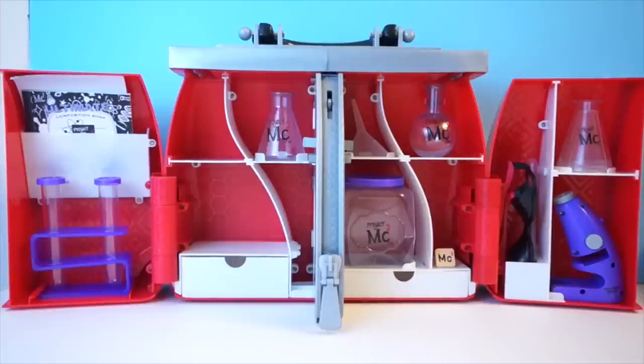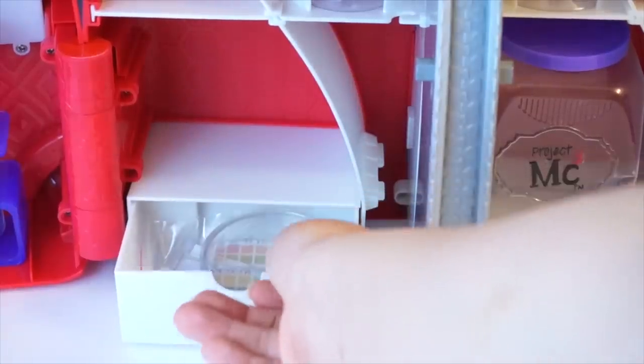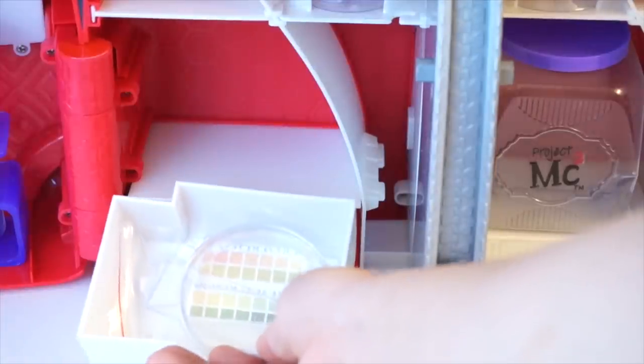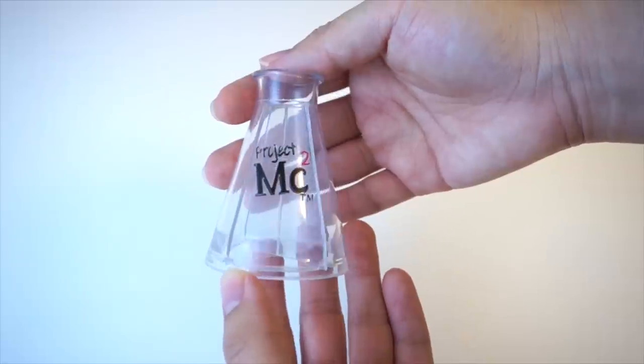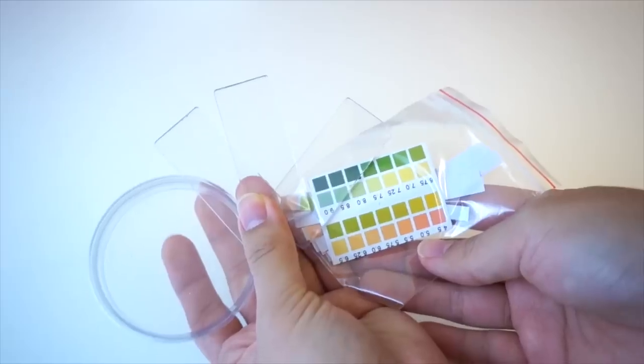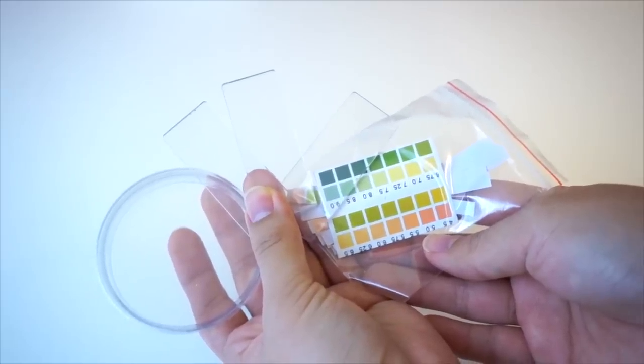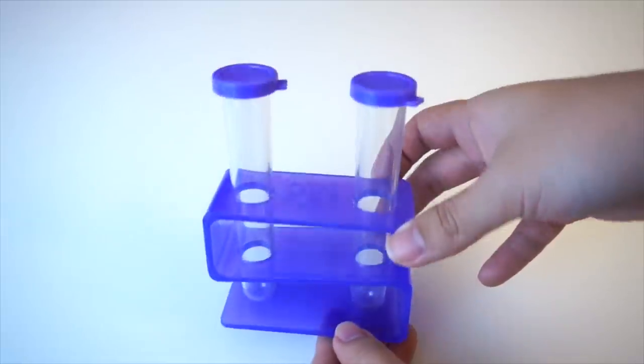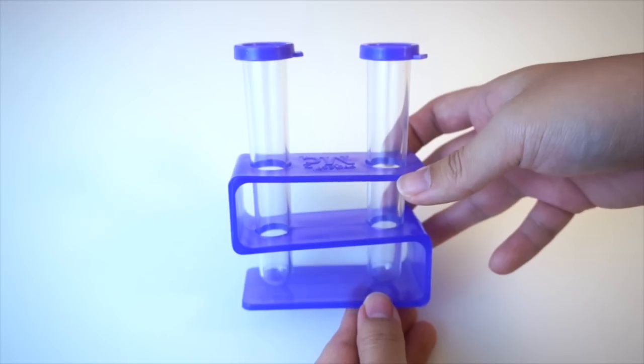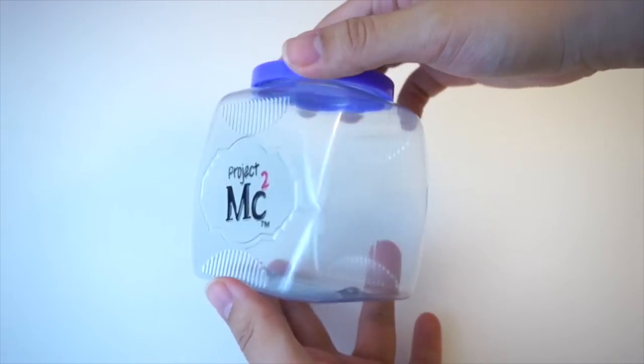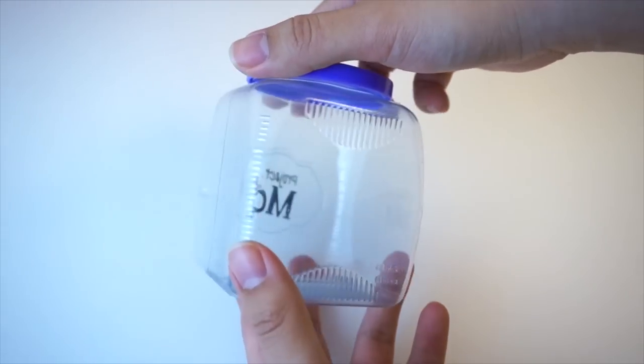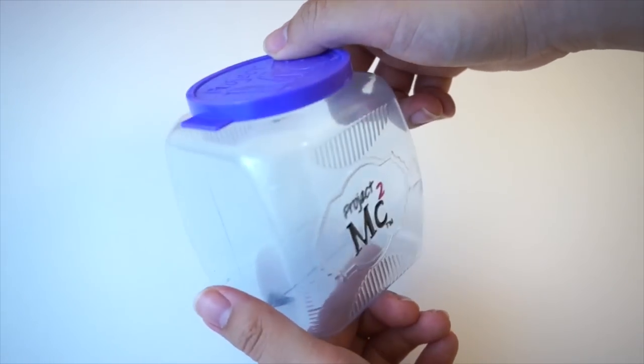Every accessory that comes with this set fits into the bag very nicely. And I love the fact that it has so many different compartments. Not only that, this set comes with 18 different accessories, not including the bag itself. The accessories are perfectly scaled to fit little hands and they're labeled Project MC Squared, which looks absolutely adorable. All of these tools look like real lab tools.